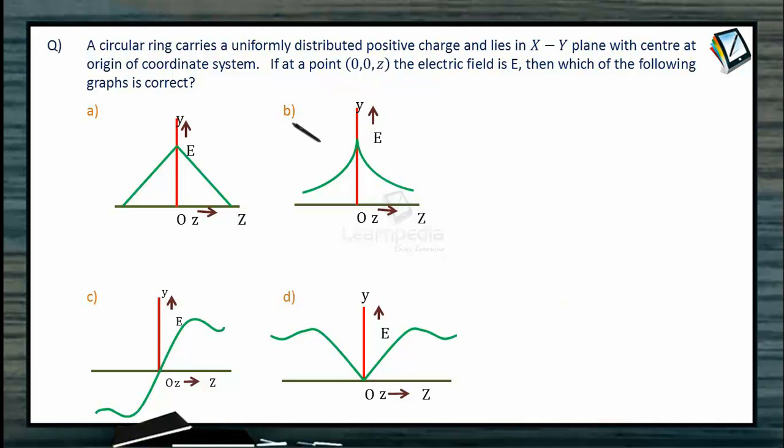Here, a circular ring carries a uniformly distributed positive charge and lies in xy plane with center at origin of coordinate system. If at a point (0,0,z) the electric field is E, then which of the following graphs is correct?